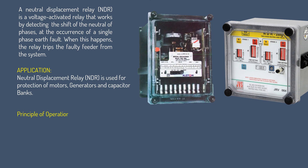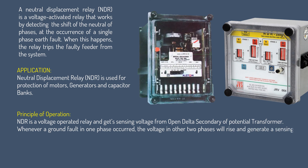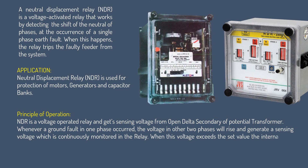Principle of Operation: NDR is a voltage-operated relay and gets its sensing voltage from the open delta secondary of a potential transformer. Whenever a ground fault on one phase occurs, the voltage in the other two phases will rise and generate a sensing voltage which is continuously monitored in the relay. When this voltage exceeds the set shift value, the internal relay operates, and the relay contact can be used for alarm and trip purposes.